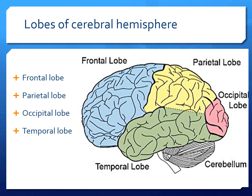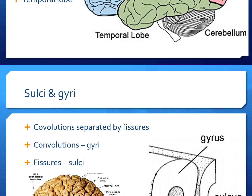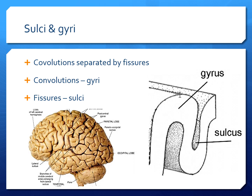Lobes of the cerebral hemisphere. There are four lobes of the cerebral hemisphere: frontal lobe, parietal lobe, occipital lobe, and temporal lobe. Before going into the division of the cerebrum into lobes, it's better we understand what is a sulcus and gyrus. Because the brain is folded, there are areas which are elevated and there are certain depressions. The elevated areas are called gyri and the depressed areas are called sulcus. The depth of the sulcus can vary.